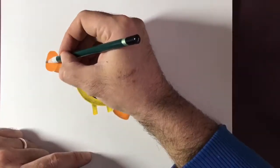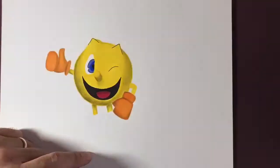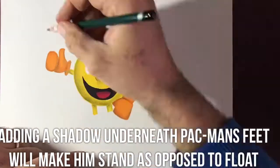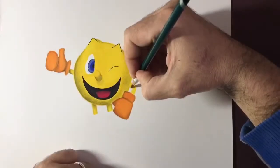The final thing that I do with this drawing is I add a shadow underneath Pac-Man's feet. This just gives a sense that Pac-Man's actually standing on something rather than floating in mid-air.